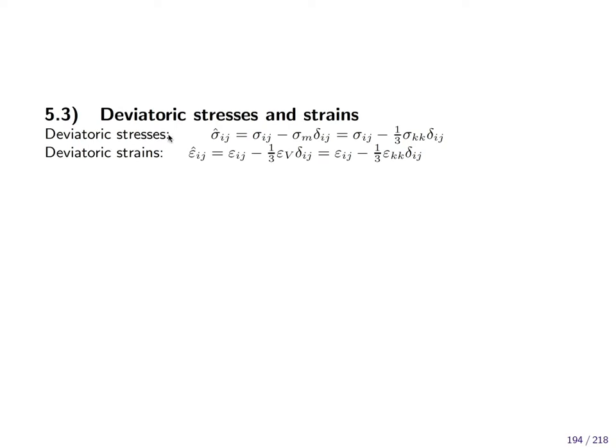Now back to the tensors which we had before. The definition of a deviatoric stress is the total stress tensor minus the hydrostatic stress. So you remember sigma_m was the hydrostatic stress, the stress which is the mean averaged of overall directions of the normal stresses, or isotropic stress, or direction independent stress. So I take the total stress and I take the direction independent stress out of it. I remove it.